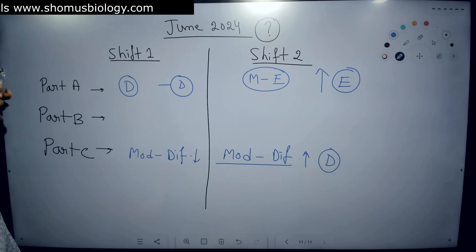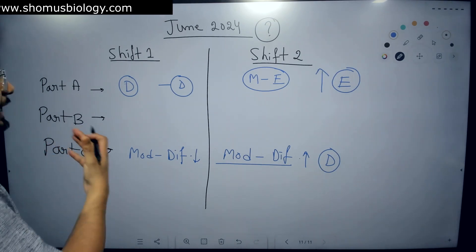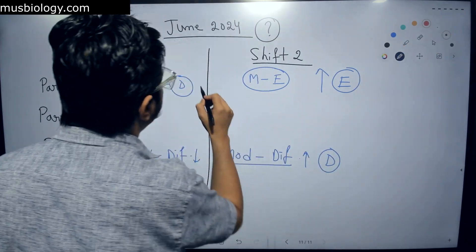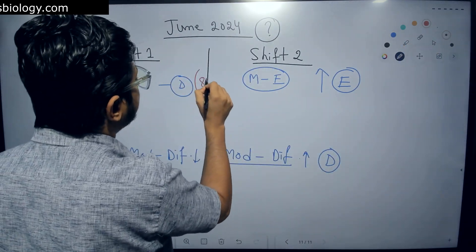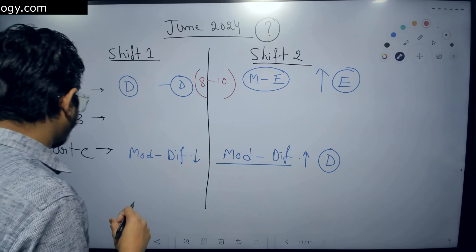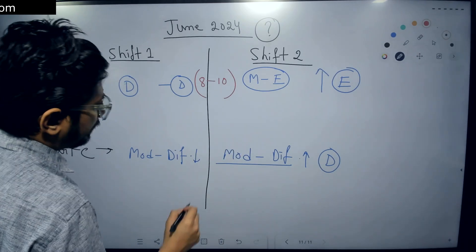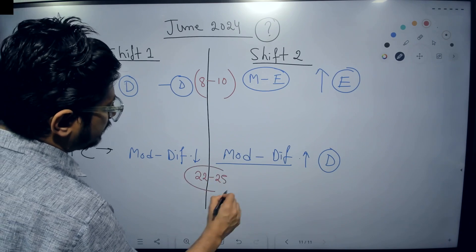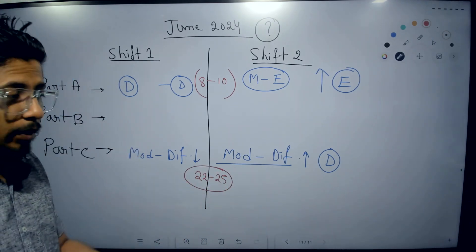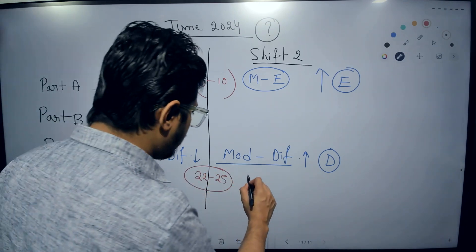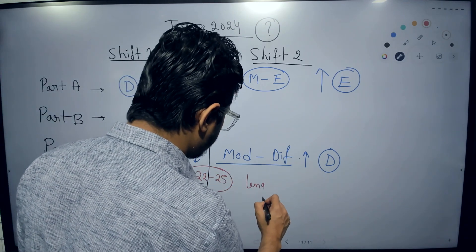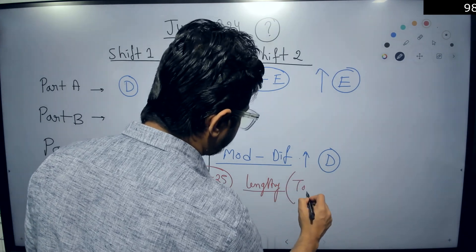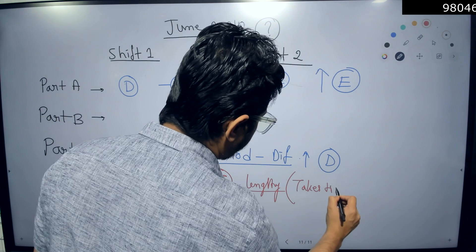Based on the category of questions in Part A, those who prepared well can answer 8 to 10 questions quite easily. Part C, if you have good preparation, you can answer 22 to 25 questions no matter whether it is moderate to difficult. But the problem is that it consumed a lot of time because it is lengthy. It takes time to solve.